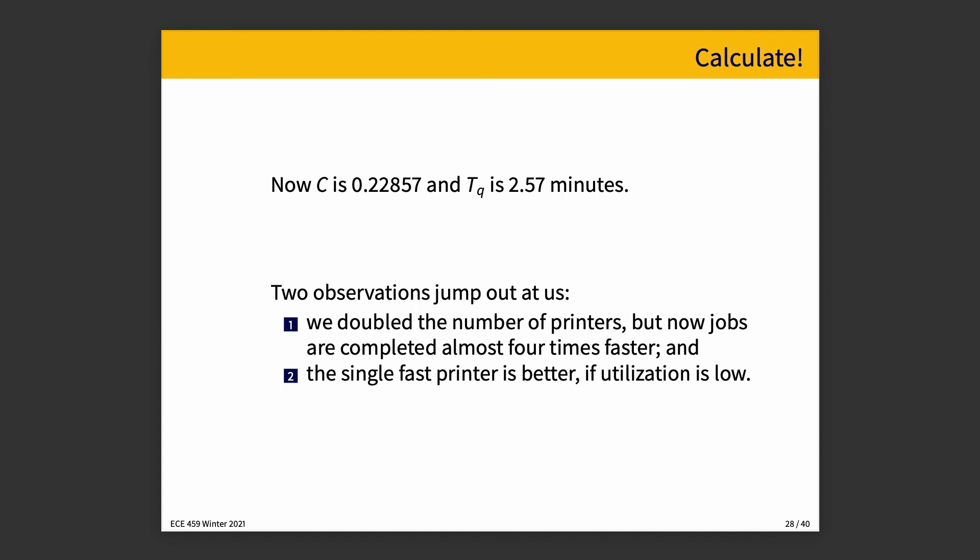Okay. So before, it was 1.67 minutes for the single printer solution, and now for the two printer solution, it's 2.57 minutes. All right. Two observations jump out at us. We doubled the number of printers, but now jobs are completed almost four times faster, right? They're done in two and a half minutes instead of 10 minutes. But actually, the single fast printer was actually better if utilization is low. If we're not using the printers as much, getting your single job out faster is better. Like, why does that make sense? Well, if nobody ever prints anything, you're the only person who's ever printing anything. You never have to wait. The slow printer takes two minutes, and the fast printer takes one minute to print your print job. So you want that. That's good. It is helpful. In fact, that's an important condition if utilization is low.